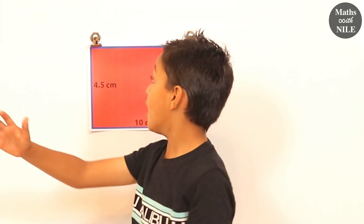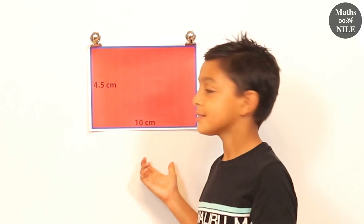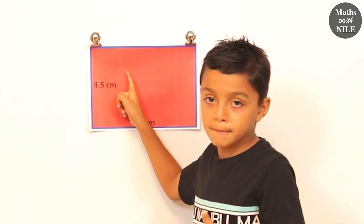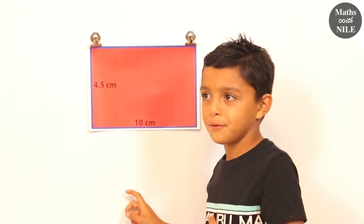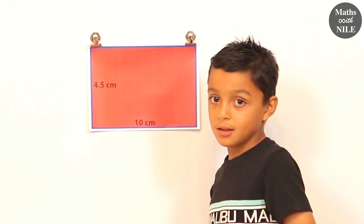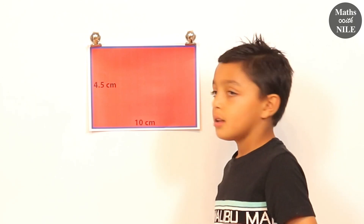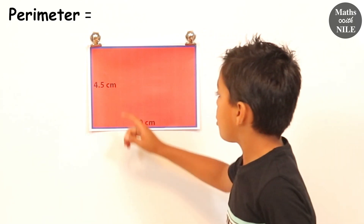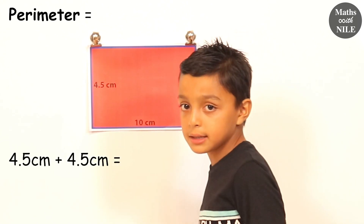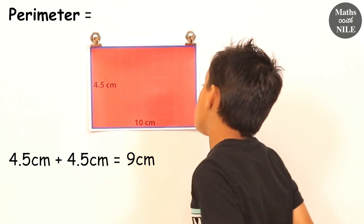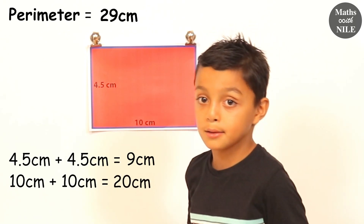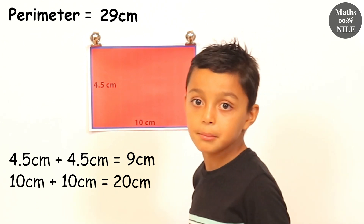What shape do you have behind you now, Niall? Another rectangle. What makes this rectangle a bit trickier? It has four point five centimetres. What's another way of saying four point five? Four and a half centimetres. But two halves make a whole. Excellent, Niall. So we add the two four point five centimetres, which equals nine centimetres, and two ten centimetres, which is twenty, so twenty-nine centimetres is the perimeter of that rectangle.